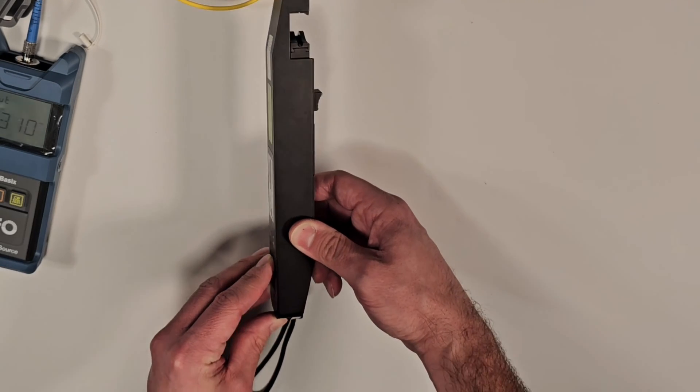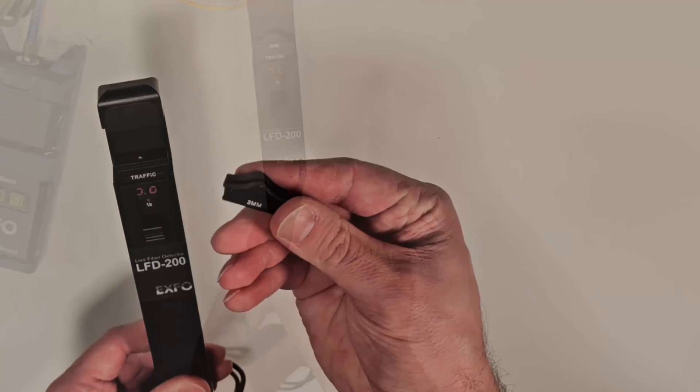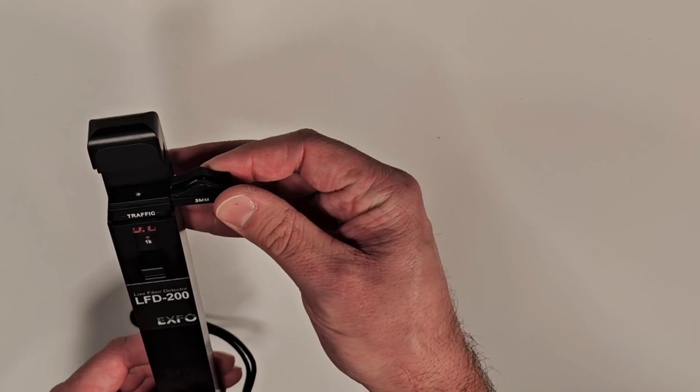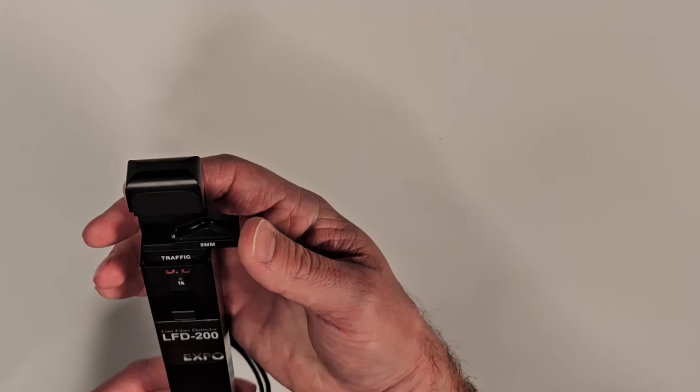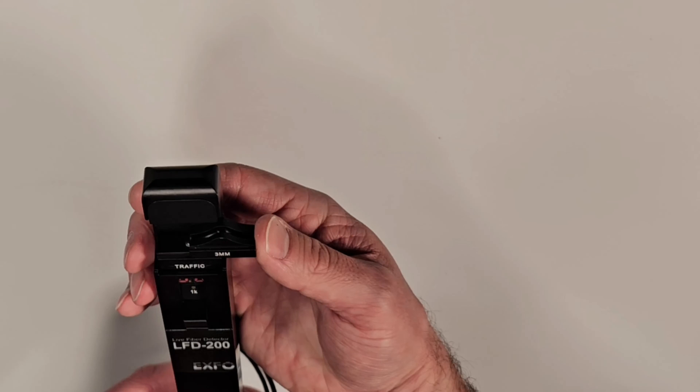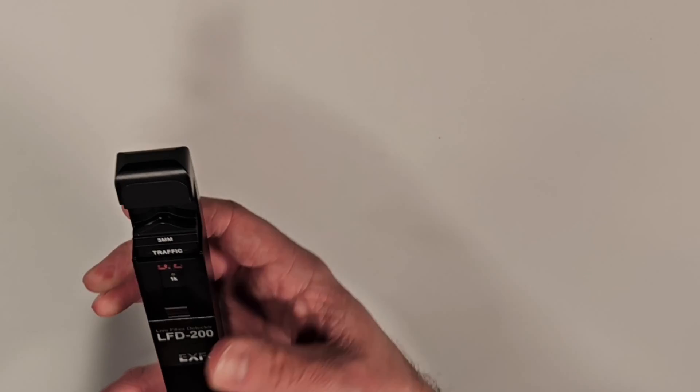To operate the live fiber detector, choose an adapter head for the type of fiber to be tested. Slide the adapter head into the mating slotted channel, applying a slight downward pressure. Place the fiber gently in the alignment groove of the adapter head.